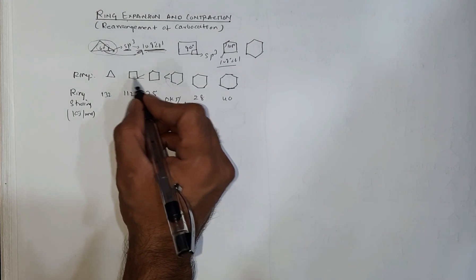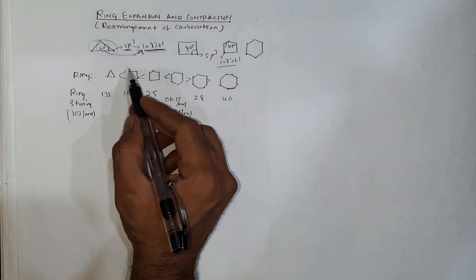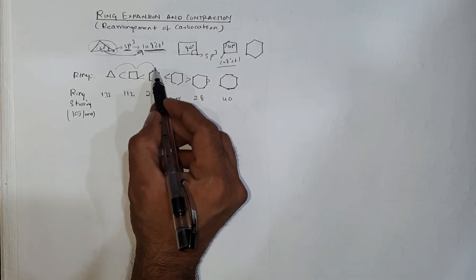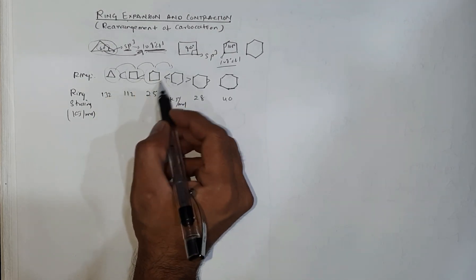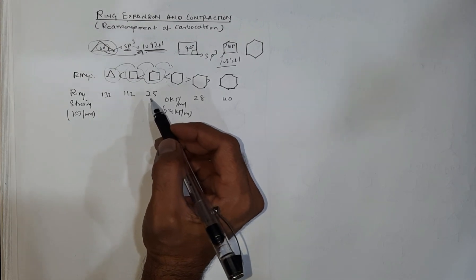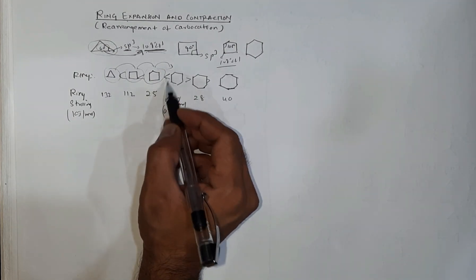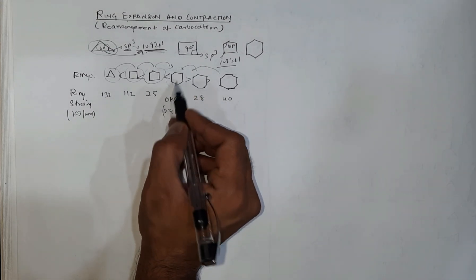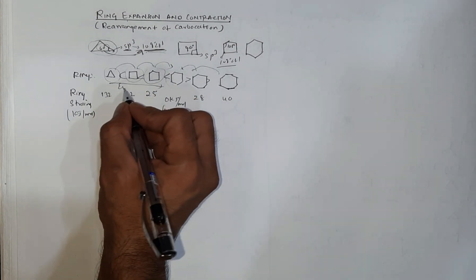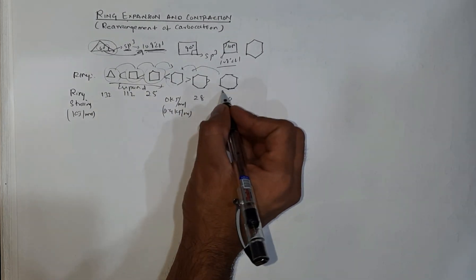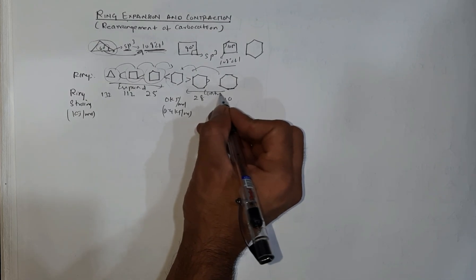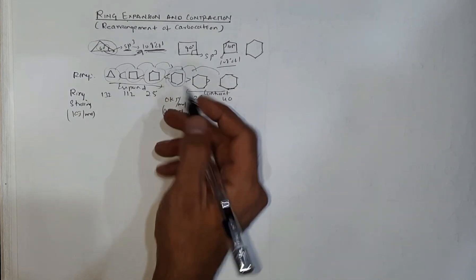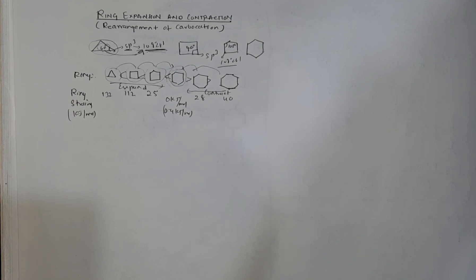Cyclohexane has the maximum stability among all these rings. Every ring tries to increase the number of carbon atoms to reach a closer, more stable structure — that is cyclohexane. So smaller rings will try to expand if they can during the formation of a carbocation, and larger rings will try to contract and convert themselves into cyclohexane during a rearrangement reaction.